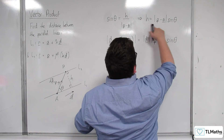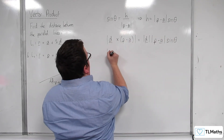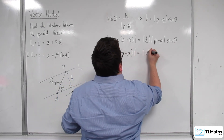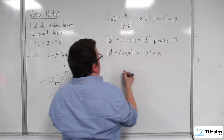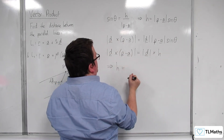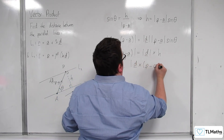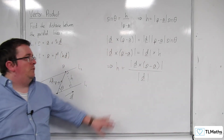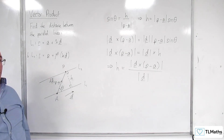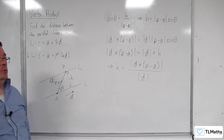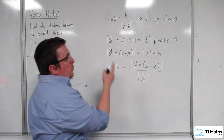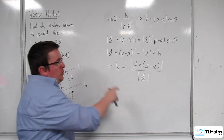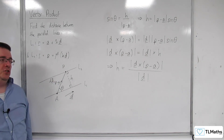This piece here is just h, as defined above. So that means the length of d cross P minus A equals the length of d times h. Therefore, h — what we want to find — is the length of d crossed with P take away A, divided by the length of d. That is a very familiar looking formula, identical in fact to the formula we found when looking at the shortest distance between a point and a line. So the distance between two parallel lines shares the same formula.